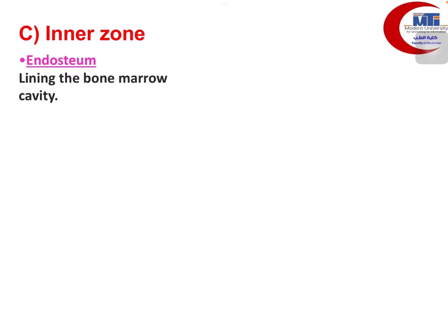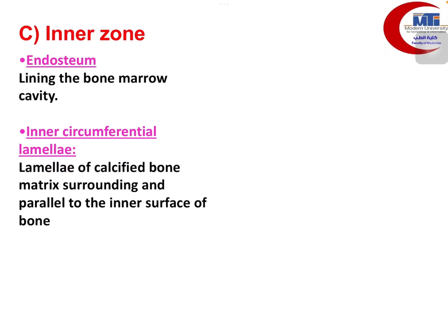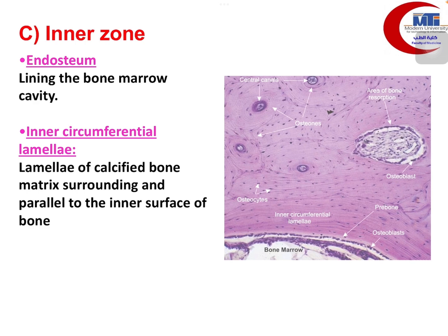The inner zone is formed of the endostium lining the bone marrow cavity from the inside of the bone, and just beneath it lie the inner circumferential lamellae. The inner circumferential lamellae are similar to the outer circumferential lamellae — running in parallel layers — but deep to the endostium rather than the periosteum. This is the endostium lining and the parallel layers of calcified bone tissue known as inner circumferential lamellae.